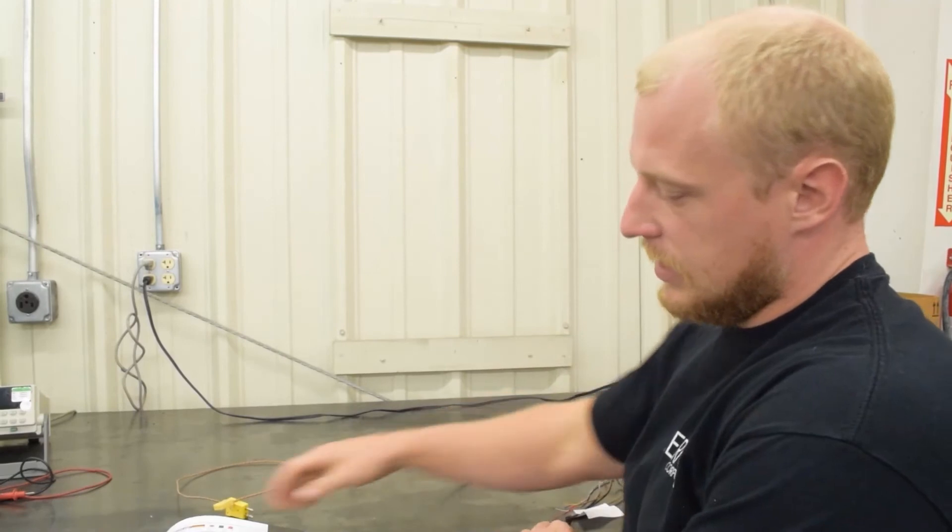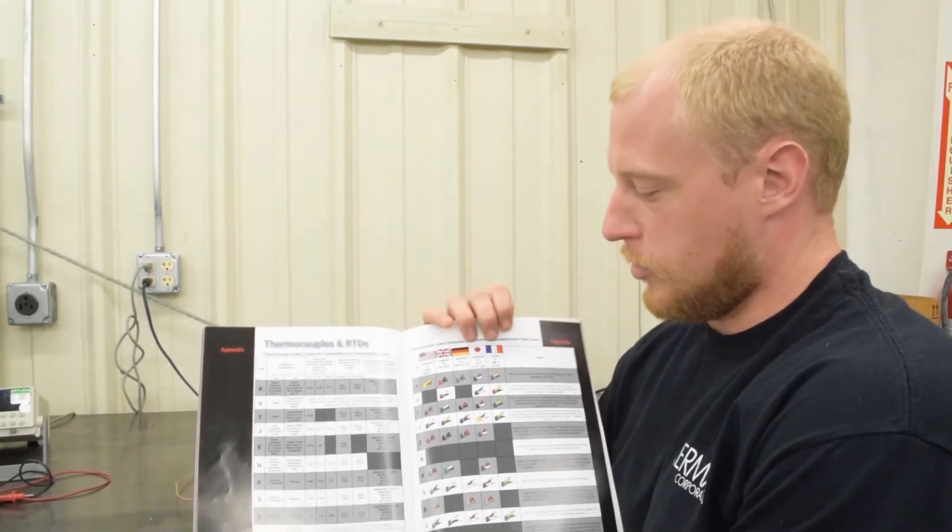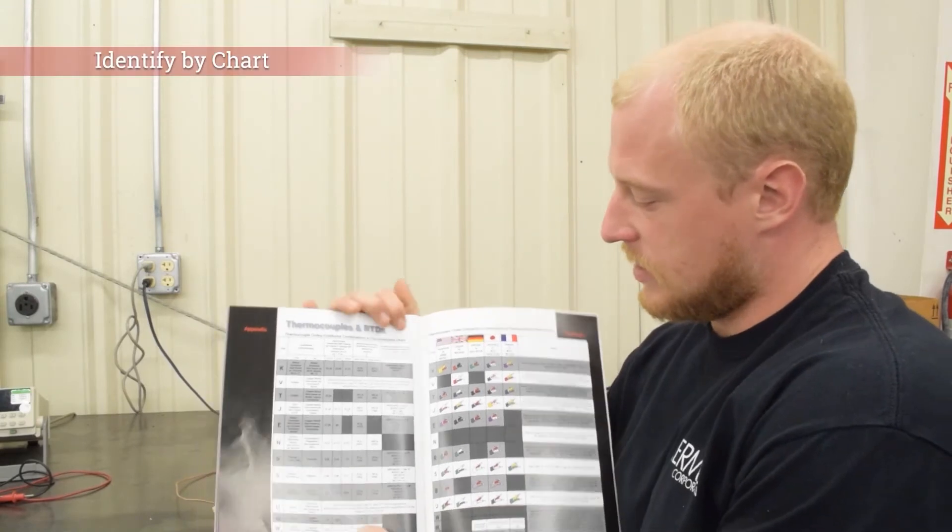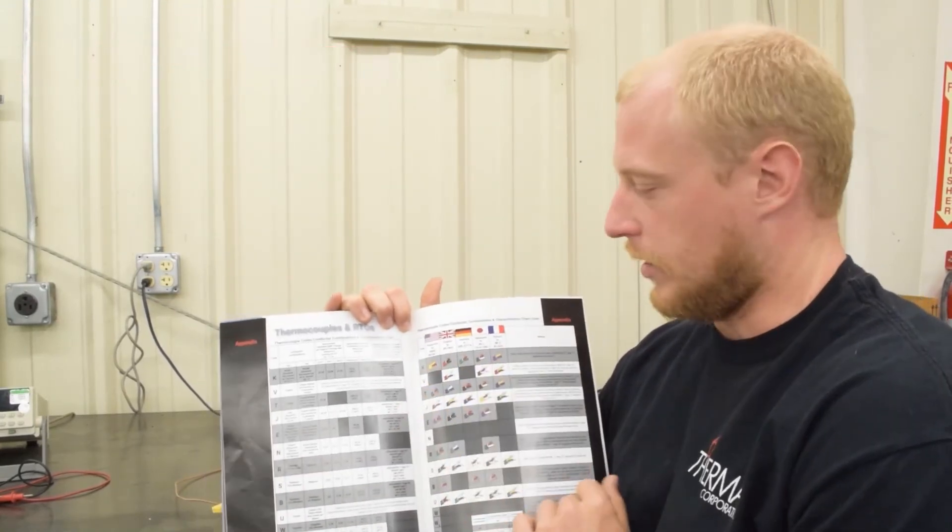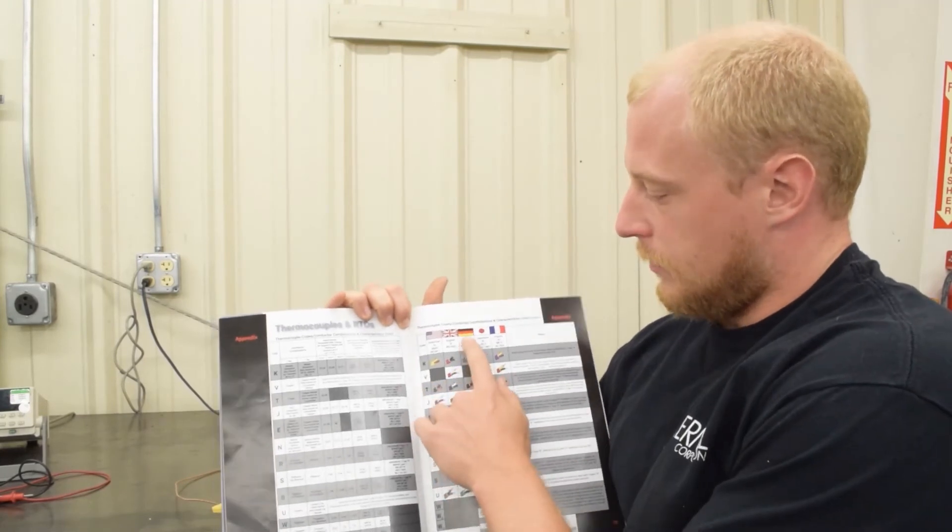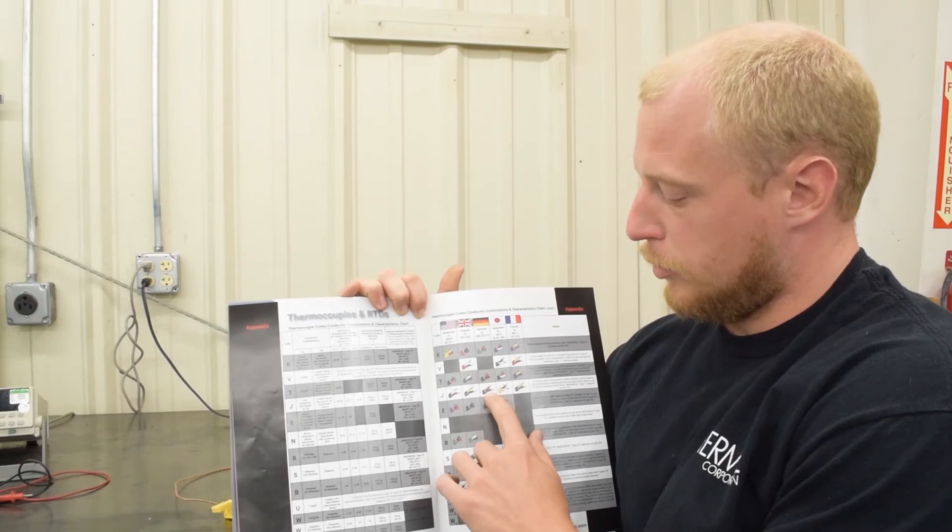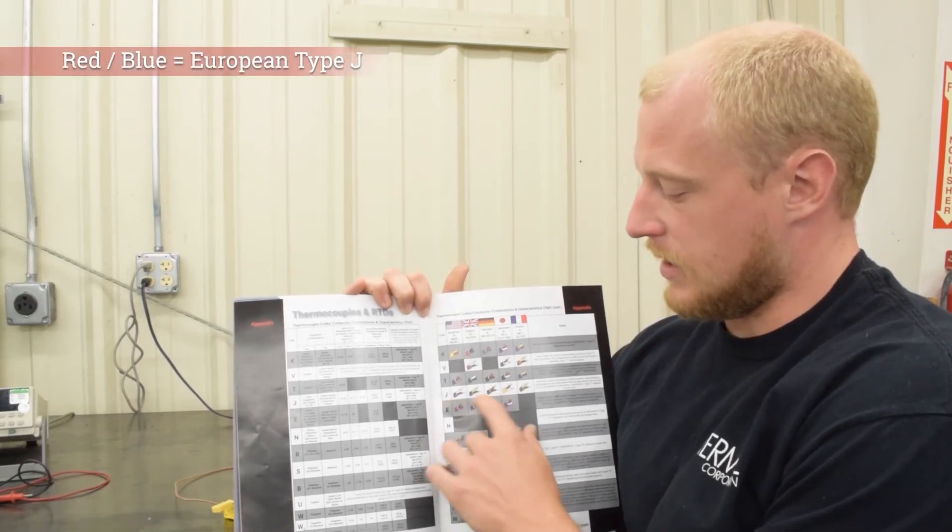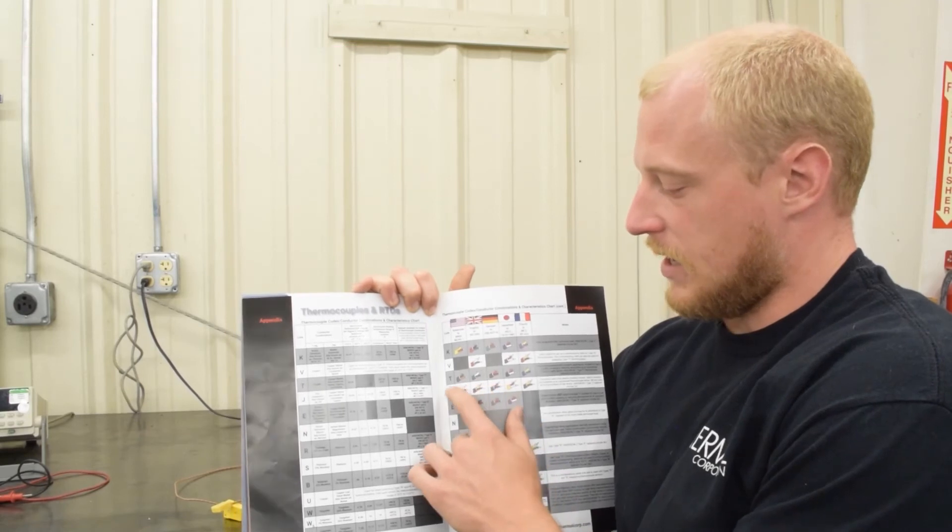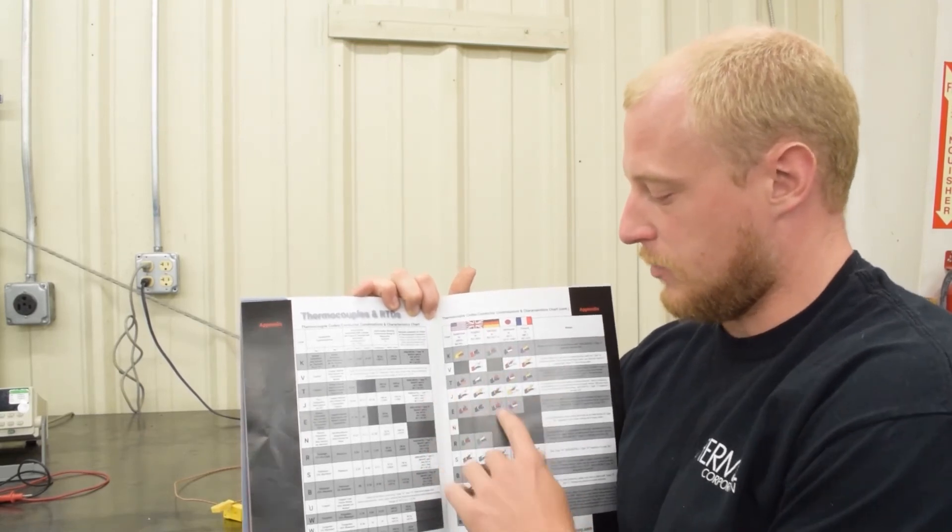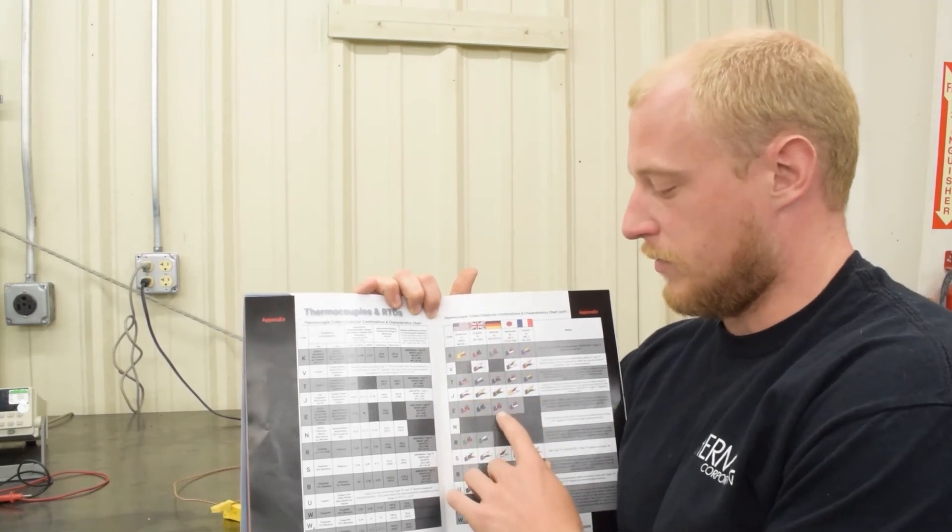We look at in our catalog we have a thermocouple and RTD chart and you can see this is in our catalog, it's on our website, it's widely available online, but in Europe for German a red and blue lead thermocouple is actually a type J thermocouple and so this is a type J thermocouple but that machine was most likely produced in Europe and so it conforms to a different color code.